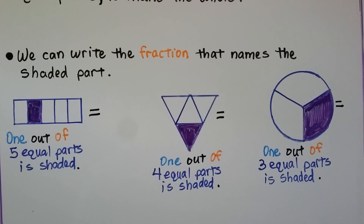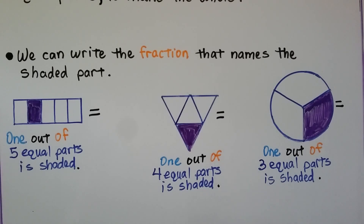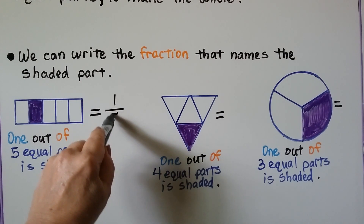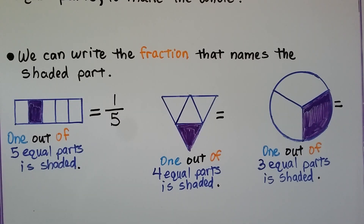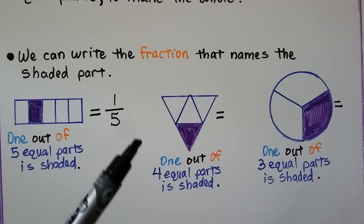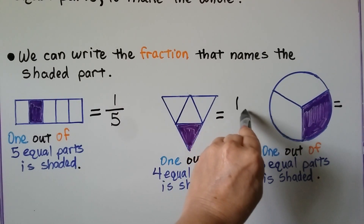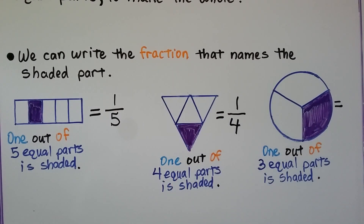We can write the fraction that names the shaded part. One out of five equal parts is shaded — we have one-fifth. We make a one for the numerator, our fraction line, and a five for our denominator. One part out of five equal parts is shaded. Here we have one out of four equal parts shaded — this would be one-fourth. We write a one, our fraction bar, and four. One part of four is shaded.